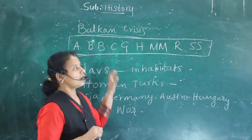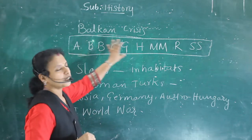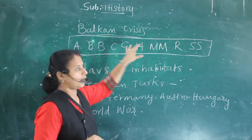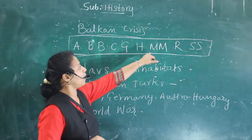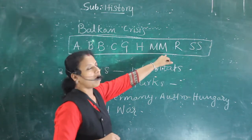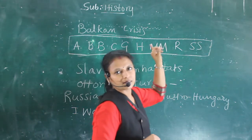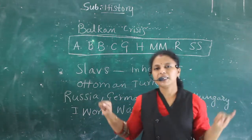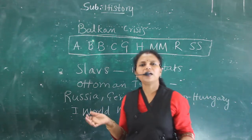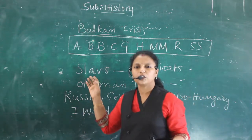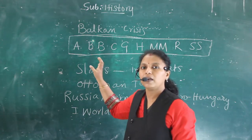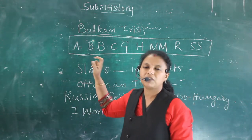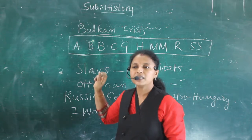Which were the 10 states? A shortform is given here: A, B, B, C, G, H, M, and R, S. This means you can create your own shortforms, but you have to write the names of the states which were there.